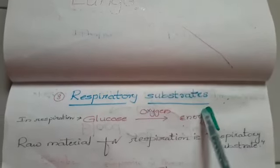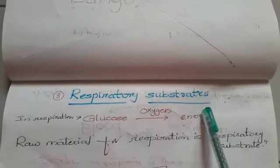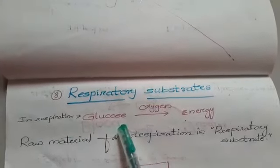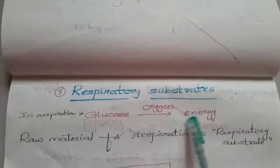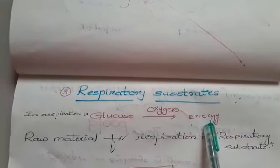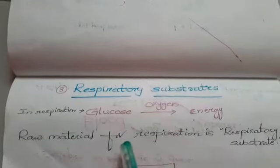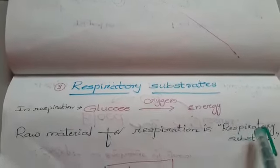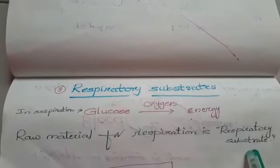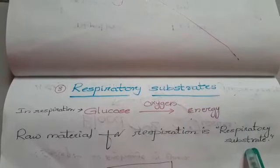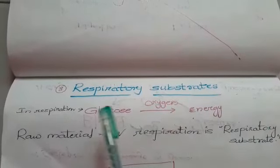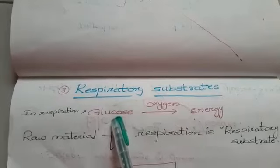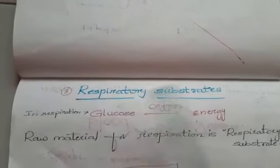Respiratory Substrates. In respiration, glucose by oxidation releases energy. The raw material for the respiration process is named as respiratory substrates. Examples include glucose, amino acids, and fatty acids.